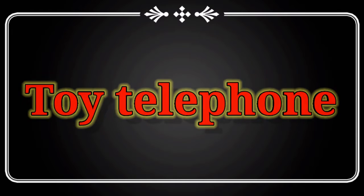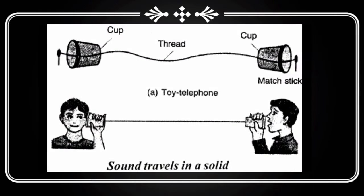So let's start the video. This is a model of a toy telephone, and you can see I have downloaded this from Google. You need two cups and one thread, and you have to make it like this.